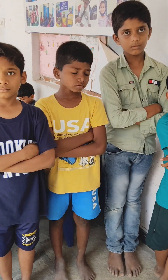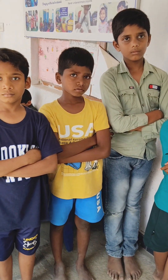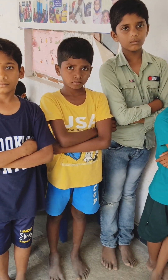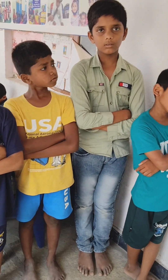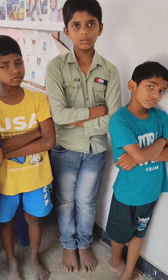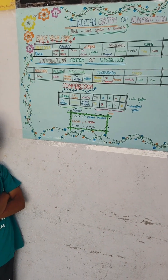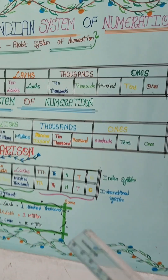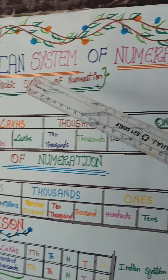There are different systems of numeration. We have the decimal system, hexadecimal system, octal system, binary system, and so many different systems. But here we are going to study the Indian system of numeration and the international system of numeration. Coming to the first one: the Indian system of numeration.